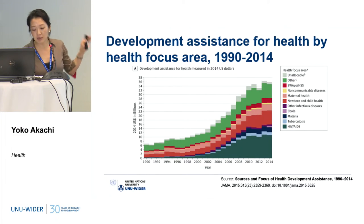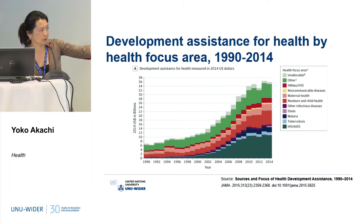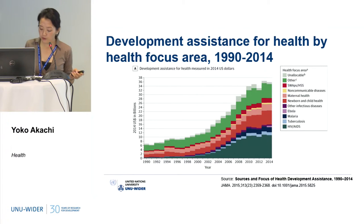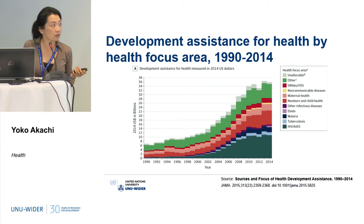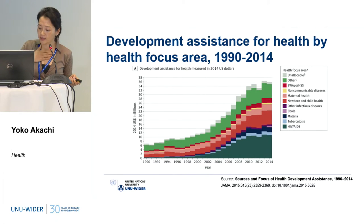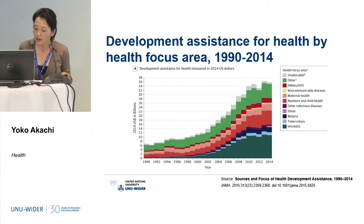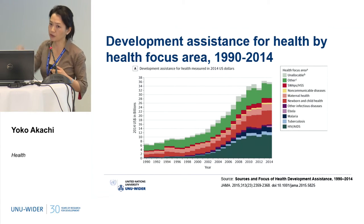This graph shows how much money has gone into development assistance for health and into which areas. Since 1990, $460 billion has gone into health. About 30% went into maternal and child health, 20% went to HIV/AIDS, 4% to malaria. Really neglected areas include non-communicable disease at less than 2%, and mental health, not mentioned even. Between 2000 and 2010, development assistance for health increased by 11% annually.